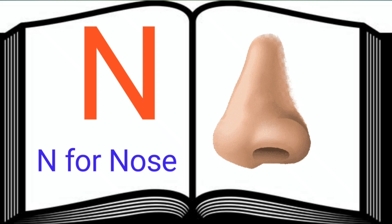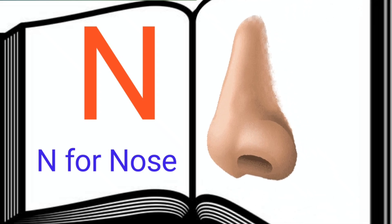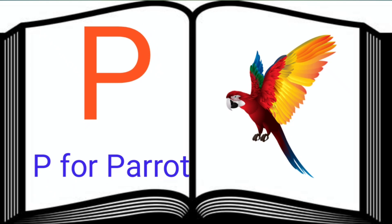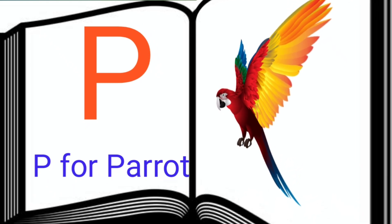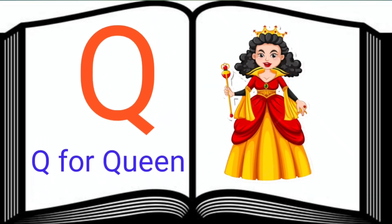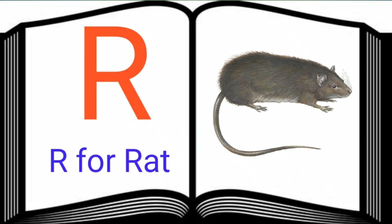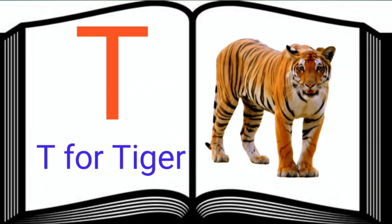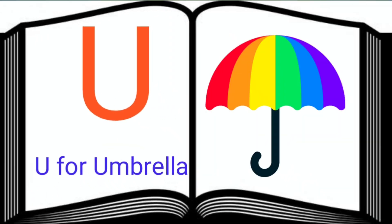N. N for Nose. O. O for Owl. P. P for Parrot. Q. Q for Queen. R. R for Rat. S. S for Sun. T. T for Tiger. U. U for Umbrella.